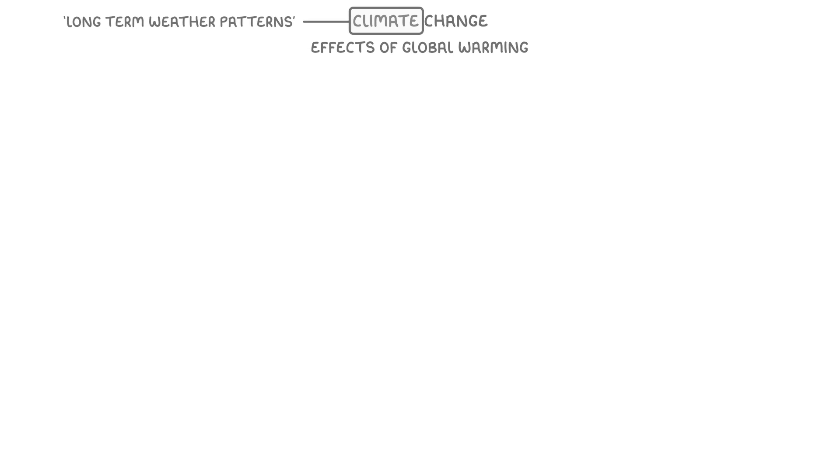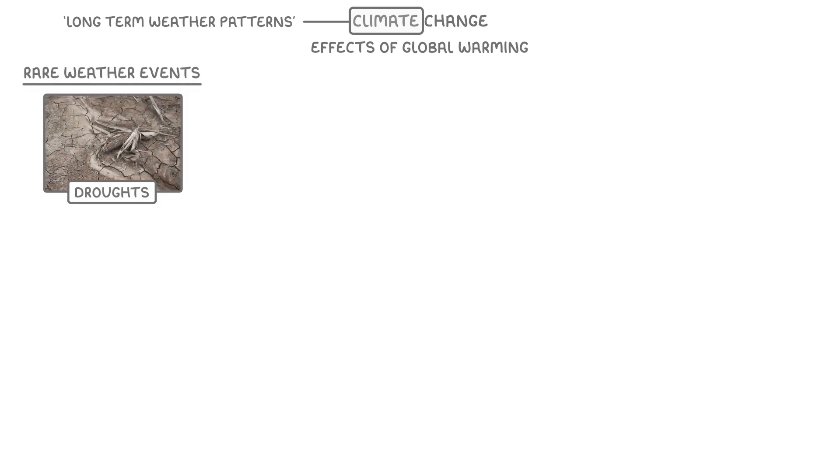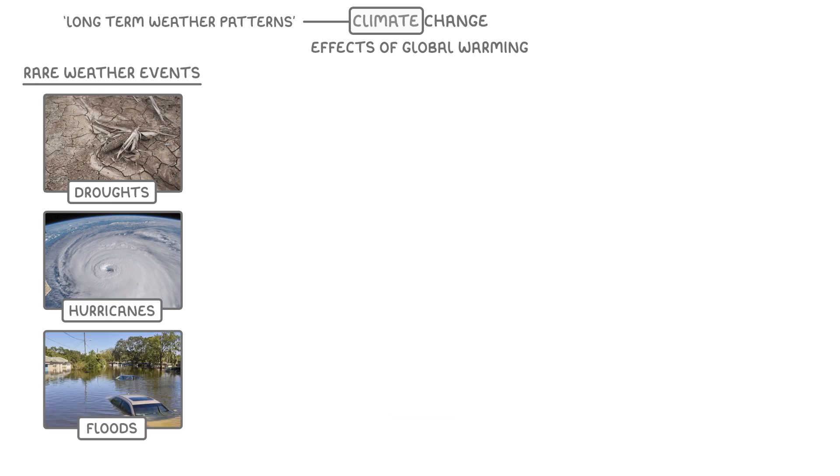For example, one of the consequences of global warming is that rare weather events like droughts, hurricanes and floods will become both more common and more severe. So we refer to these changes under the term climate change.